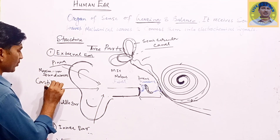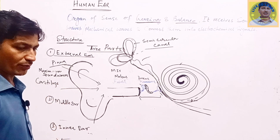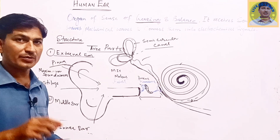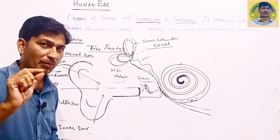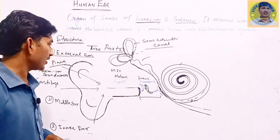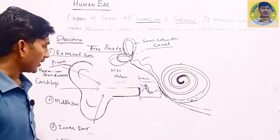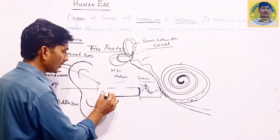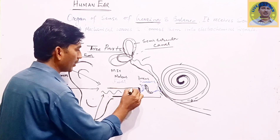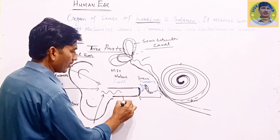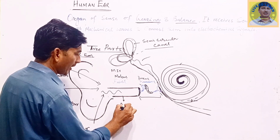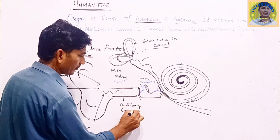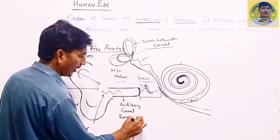The pinna is made up of cartilage — a soft bone. We have two kinds of bones inside the body: one is hard compact bone, and the other is soft bone called cartilage. The external ear pinna is made up of soft cartilage bone. After collecting maximum sound waves, they are shifted into a tube-like structure called the auditory canal, or ear canal.